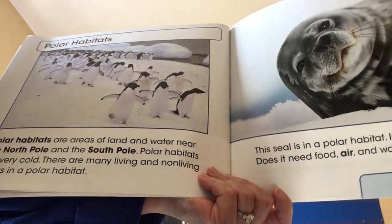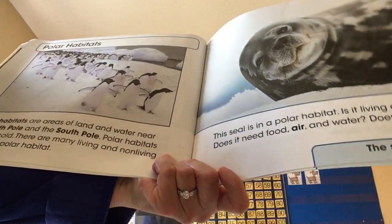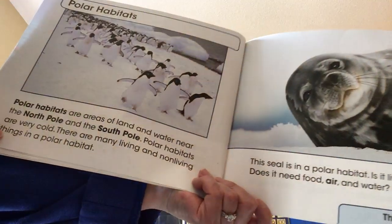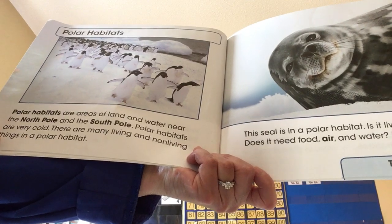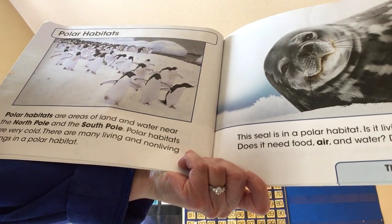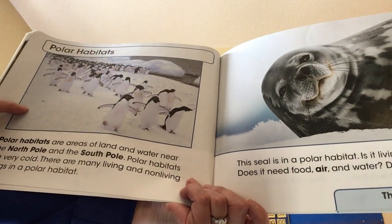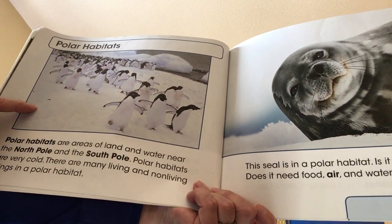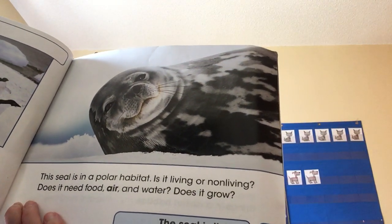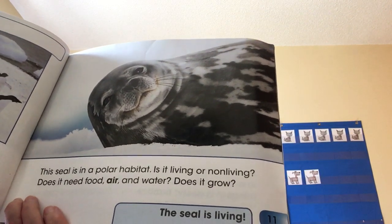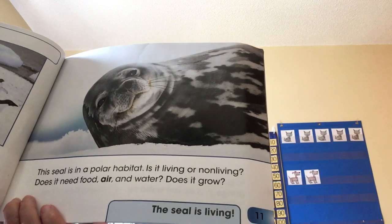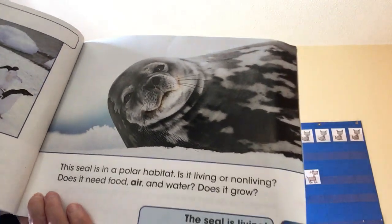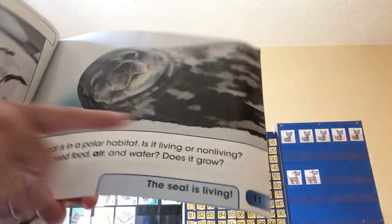Polar habitats are areas of land and water near the North Pole and the South Pole. The polar habitats are very cold. There are many living and non-living things in a polar habitat. The snow and the ground are non-living. Penguins are living. This seal is in a polar habitat — is it living or non-living? It's living. Does it need food, air, and water? Yes. Does a seal grow? Yes, just like kids grow into adults, seals grow into adult seals.